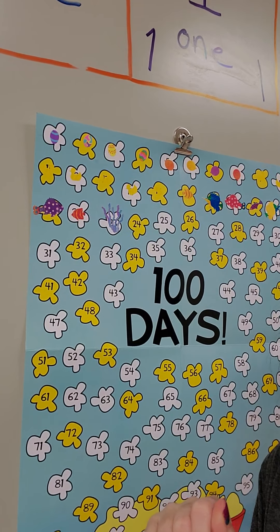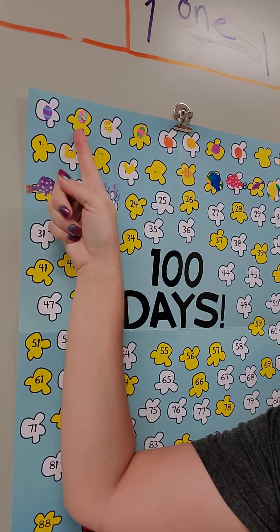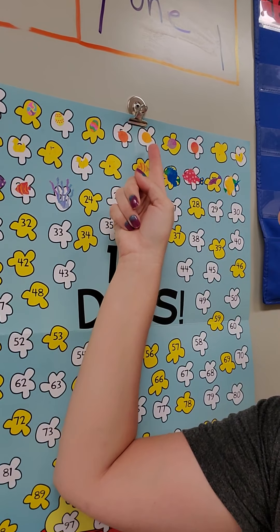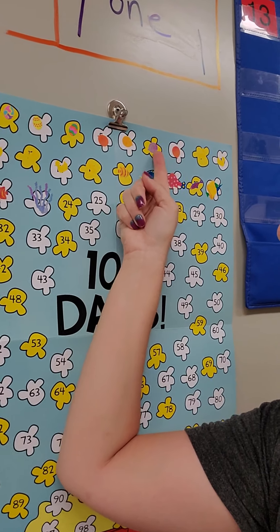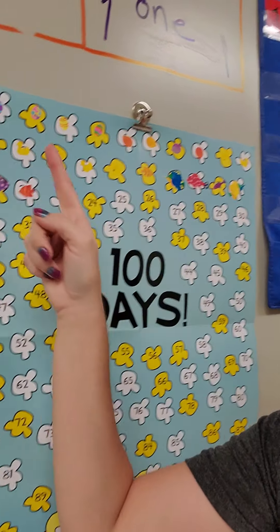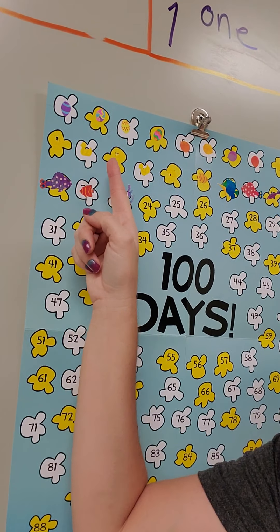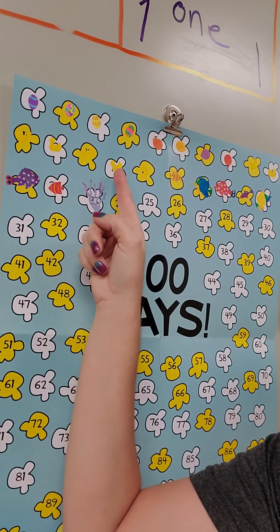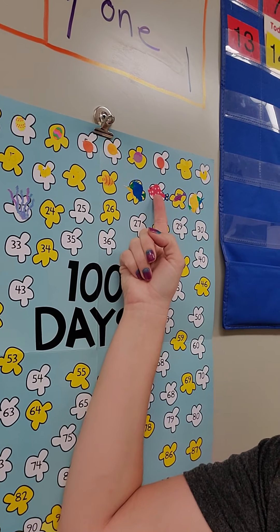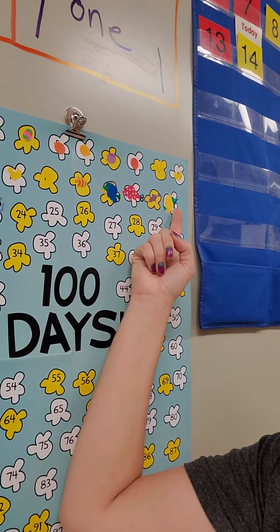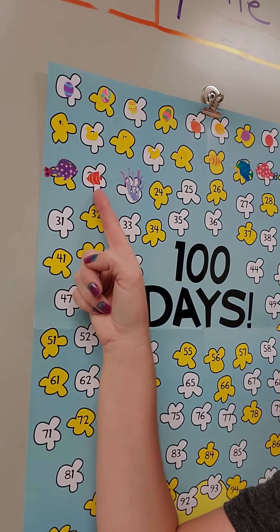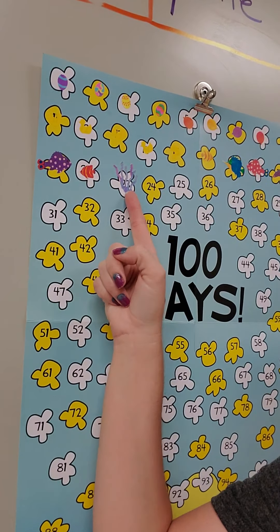And let's go ahead and count our days. 1, 2, 3, 4, 5, 6, 7, 8, 9, 10, 11, 12, 13, 14, 15, 16, 17, 18, 19, 20, 21, 22, 23.